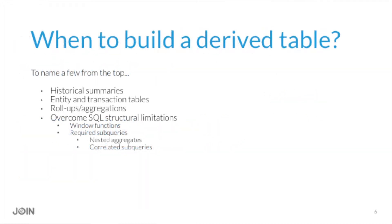So when do we build a derived table? We've got historical summaries, entity and transaction tables, roll-ups, aggregations — those terms are often used synonymously — and to overcome SQL structural limitations. Those are things like window functions, correlated or nested subqueries. If you get nested aggregates, that's not a valid SQL statement, so we need to build a subquery to overcome that.